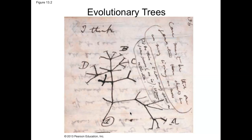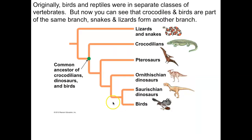The last topic is the evolutionary tree — Darwin's drawing of an evolutionary tree. In this example, birds and reptiles were originally placed in separate classes of vertebrates, because if you look at a bird and a snake you see no similarity. However, DNA sequences show they are actually very closely related. The discovery that dinosaurs had feathers gives more evidence that birds are actually descendants of reptiles.